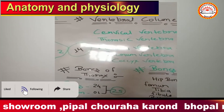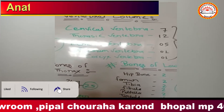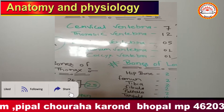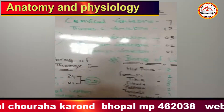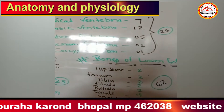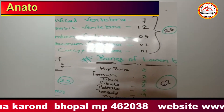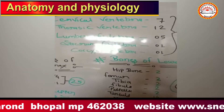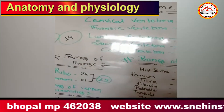There are 5 types of vertebral column in the human body: cervical vertebra 7, thoracic vertebra 12, lumbar vertebra 5, sacrum 1, and coccyx 1. So total number of 26 vertebrae.